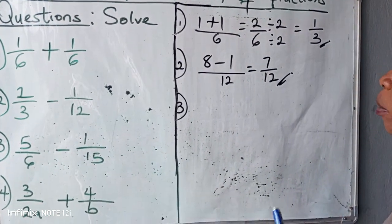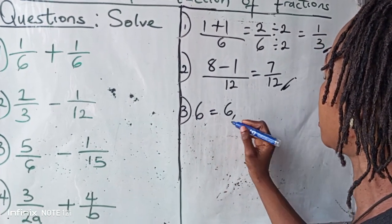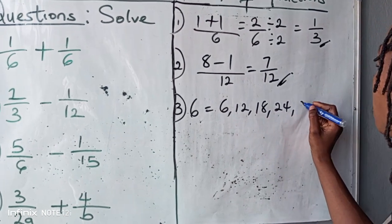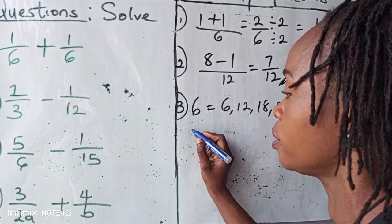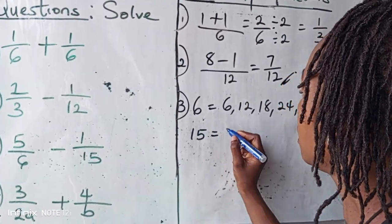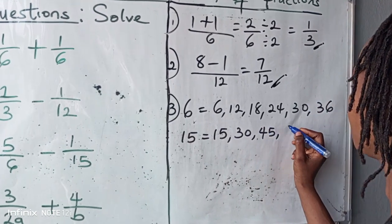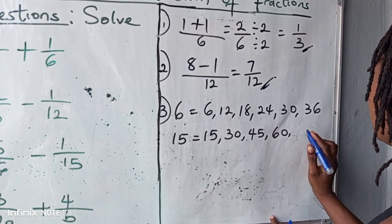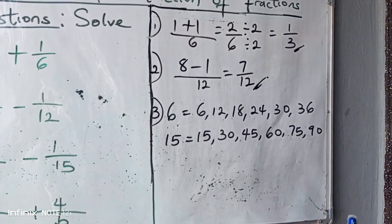So the multiple of six here, we have equal to six, twelve, eighteen, twenty-four, thirty, thirty-six, and so on. Now the multiple of fifteen. We have fifteen, thirty, forty-five, sixty, seventy-five, ninety, and so on.